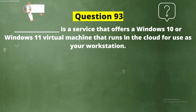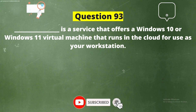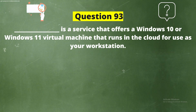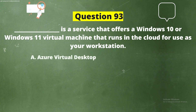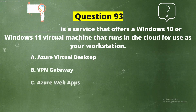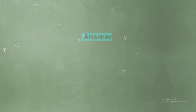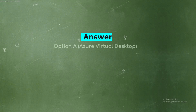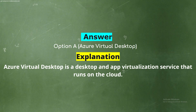Question 93. Fill in the blank: Dash is a service that offers a Windows 10 or Windows 11 virtual machine that runs in the cloud for use as your workstation. The options are: Azure Virtual Desktop, VPN Gateway, Azure Web Apps, or Express Route. The correct answer is Option A: Azure Virtual Desktop — a desktop and app virtualization service that runs in the cloud.